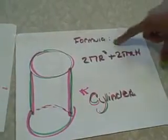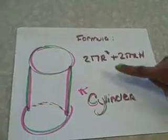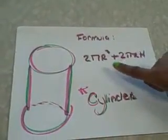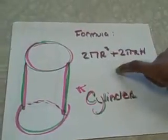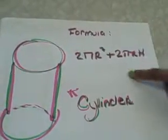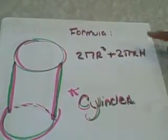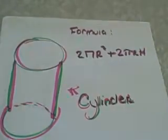This is the formula for cylinder: 2 times pi times radius squared plus 2 times pi times radius times height.